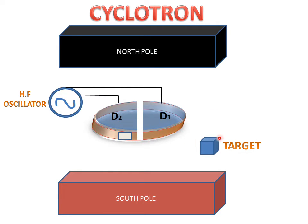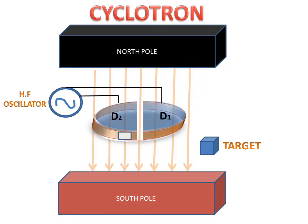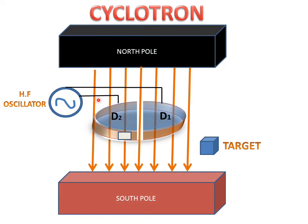There is a target where our accelerated particle will strike for experiments. The north pole gives magnetic flux towards the south pole. So these are the parts of the cyclotron.